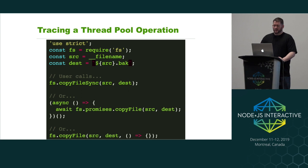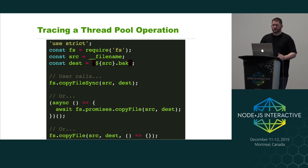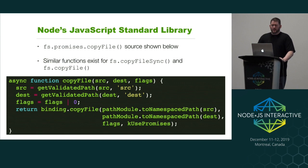Now I want to actually trace through thread pool operations — all the way from user-land JavaScript code down to the thread pool. We're going to do a copy file operation using fs.copyFile. There are three different variations: the synchronous version, the promises-based version, and the callback-based version.